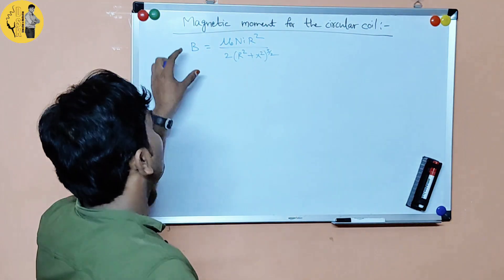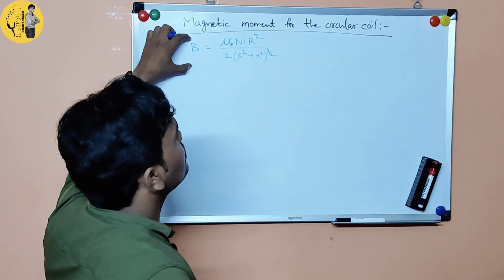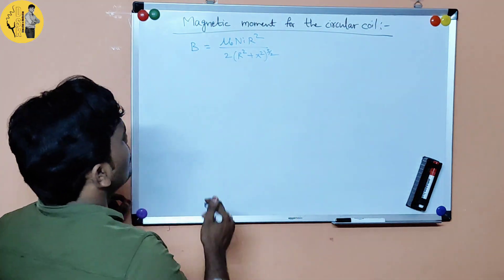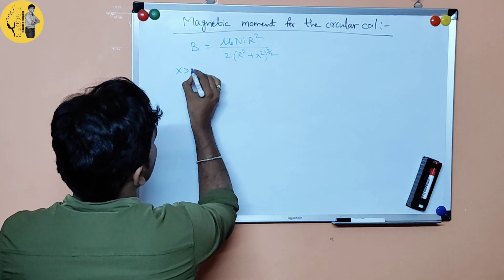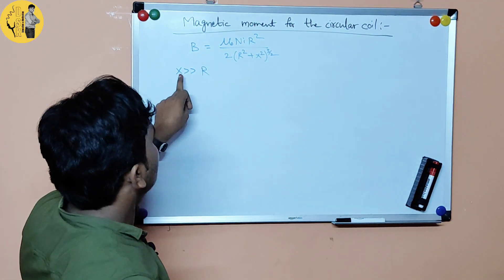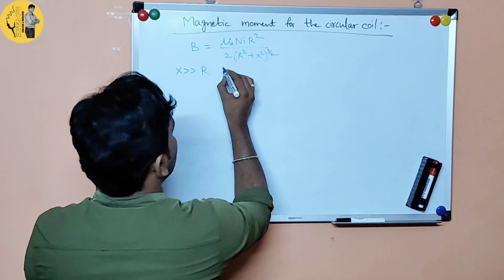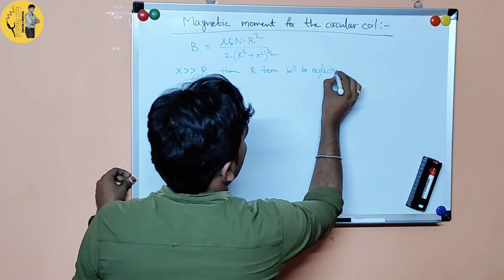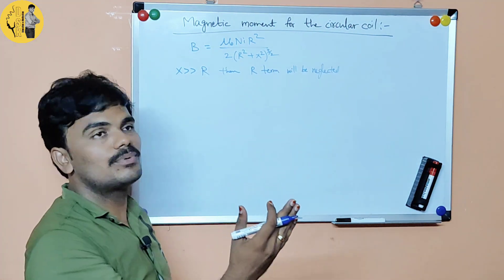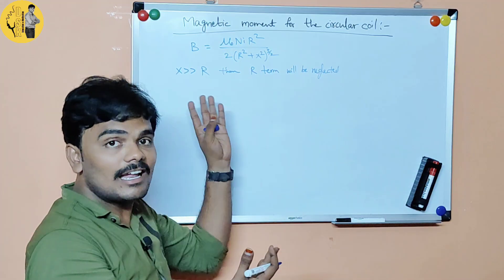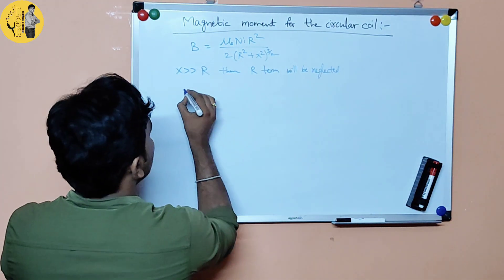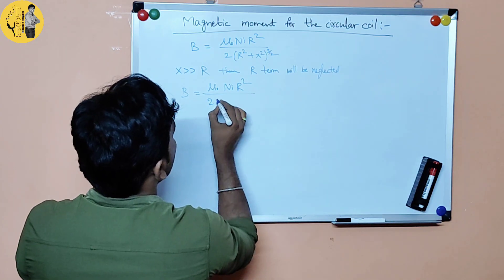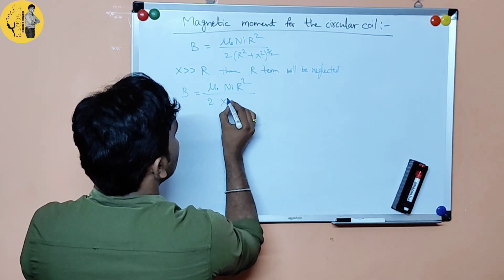We will use this expression to derive the magnetic moment equation. We apply the condition: if x is greater than r, then r can be neglected. So when x is much greater than r, the r squared term in the denominator is neglected. B becomes equal to mu naught n i r squared divided by 2 into x squared, whole to the power 3 by 2.